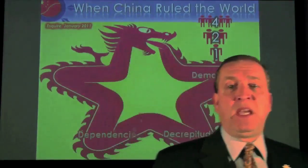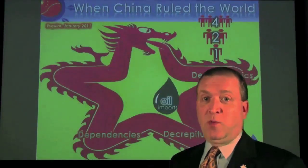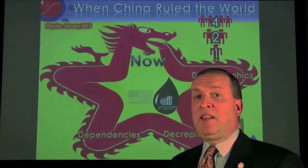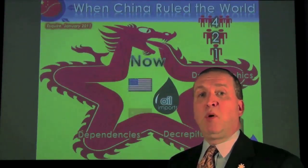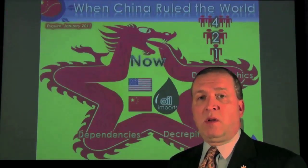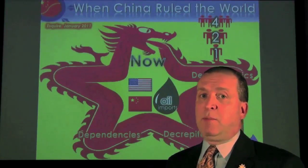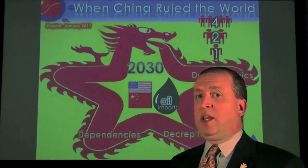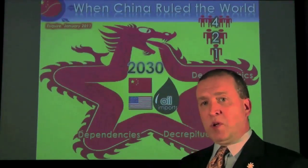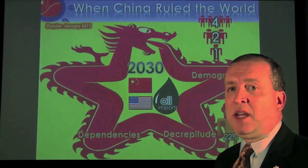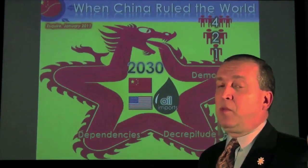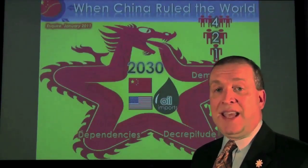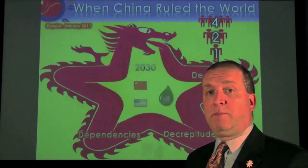The third big issue is dependencies, one we explore in this simulation. Right now, the United States is the biggest importer of oil in the world, with China coming up rapidly as number two. Well before 2030, which is the timeframe we're projecting to in many of these instances, China will surpass the United States and become the biggest importer of oil in the world.